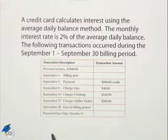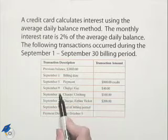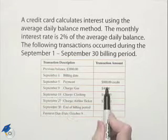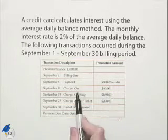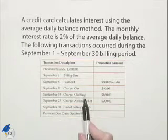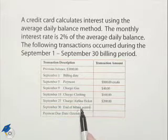We have a previous balance of $3,800. A payment of $800 was made. Then we have charges for gas, for clothing, for an airline ticket, and then we have the end of the billing period.